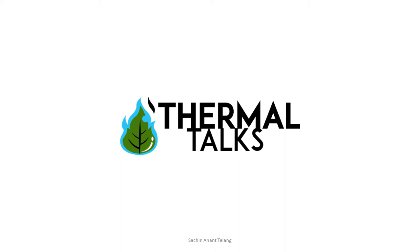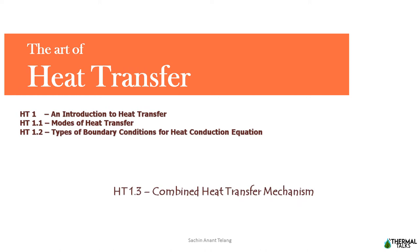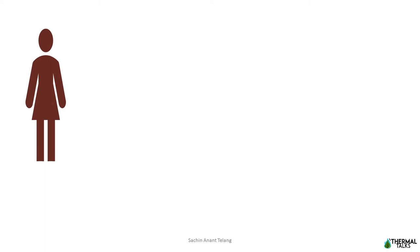Namaste friends, I welcome you all to my YouTube channel Thermaltalks. Today we will discuss the combined heat transfer mechanism. Let us take a human being who has a body temperature of 37 degrees Celsius, surface area 1.6 meter square, and human skin has very good emissivity. I have taken it as 0.95, though it can reach up to 0.98 also.